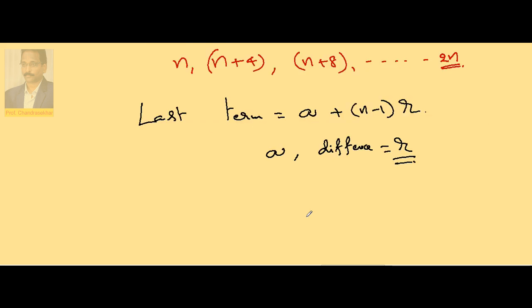Now if I use this formula here, last term in this case 2n. So 2n is equal to first one is n plus total there are 65 used and with a difference of 4.